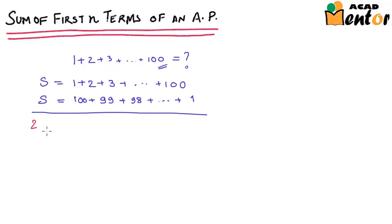We get 2S here is equal to 1 plus 100 is 101, same as 99 plus 2 is 101, 98 plus 3 is also 101, and you will get 101 till the end. Now if you closely observe, you will get 101 a hundred times because there were 100 natural numbers that were being added.